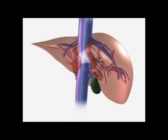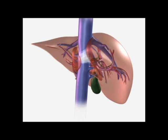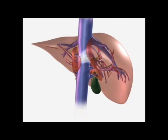Above the level of the renal veins, there are usually no caval tributaries posteriorly. A fibrous ligament courses between the caudate lobe and the posterior aspect of the right liver; this structure is known as the cava ligament. The caudate lobe embraces the left side of the vena cava on its posterior surface, and lies within the omental bursa, posterior to the lesser omentum and the left hemi-liver. There are additional posterior inferior draining hepatic veins with a short course into the anterior surface of the inferior vena cava, and these may be large. Examples include small posterior caudate veins and accessory right hepatic veins.